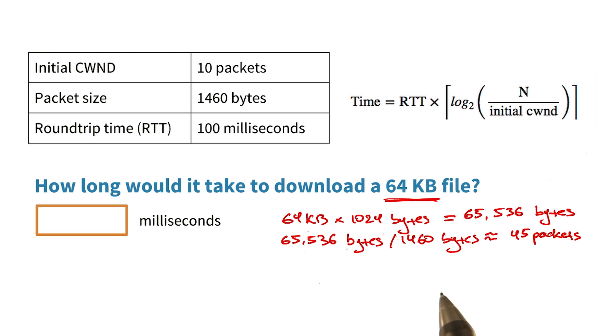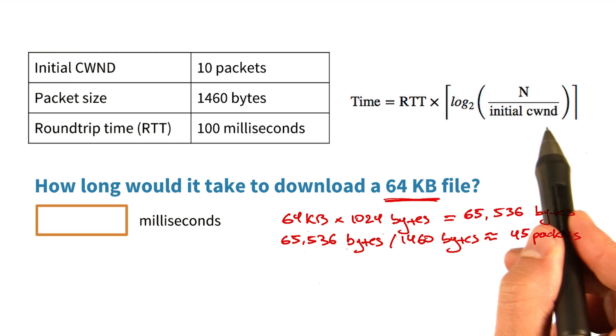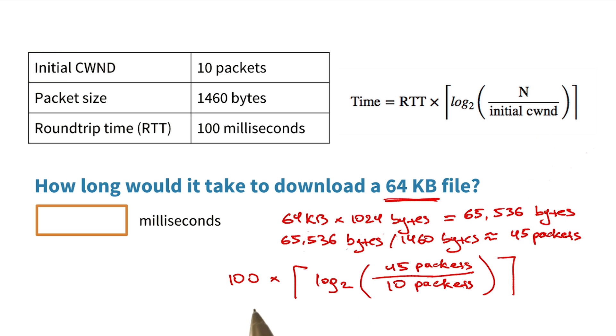Next, we can plug in the numbers that we have into the formula that we have here. We know that the round trip time is 100 milliseconds. We have 45 packets that we need to transfer. And the initial congestion window is 10 packets.